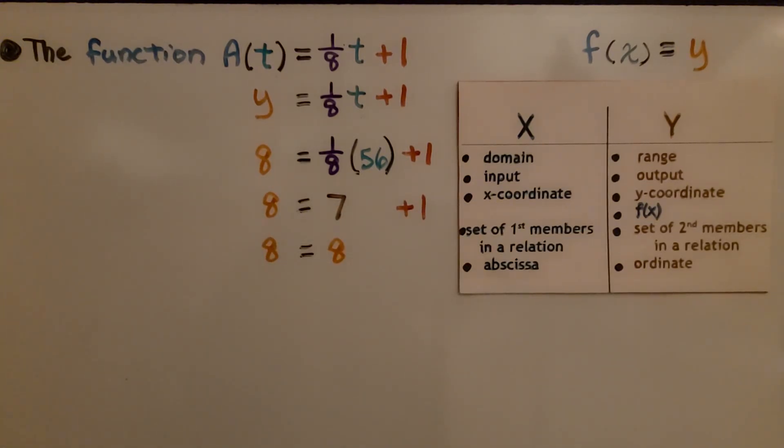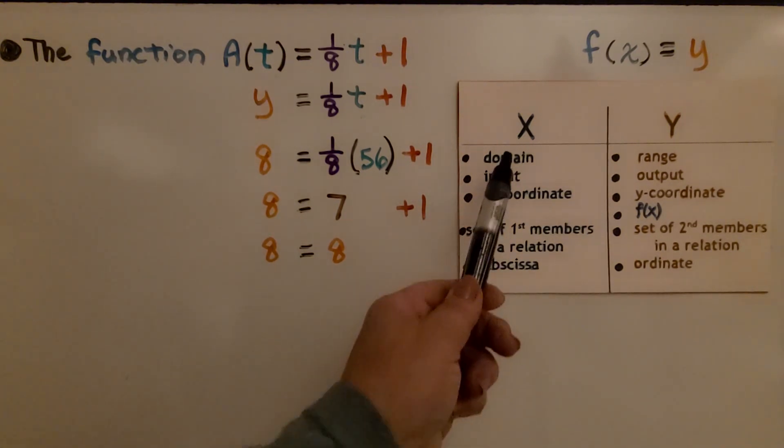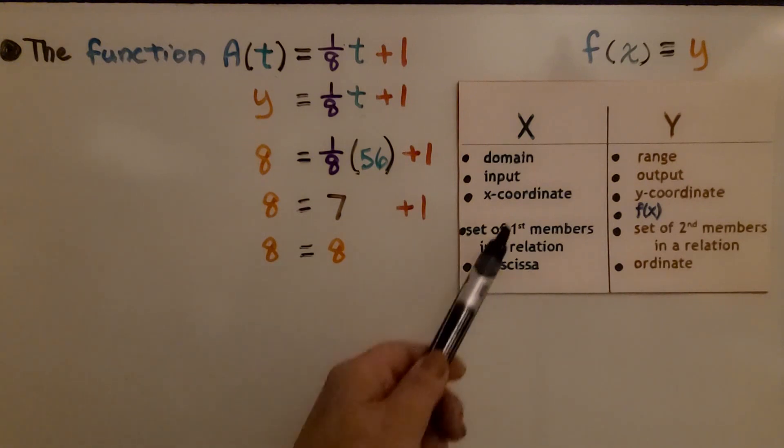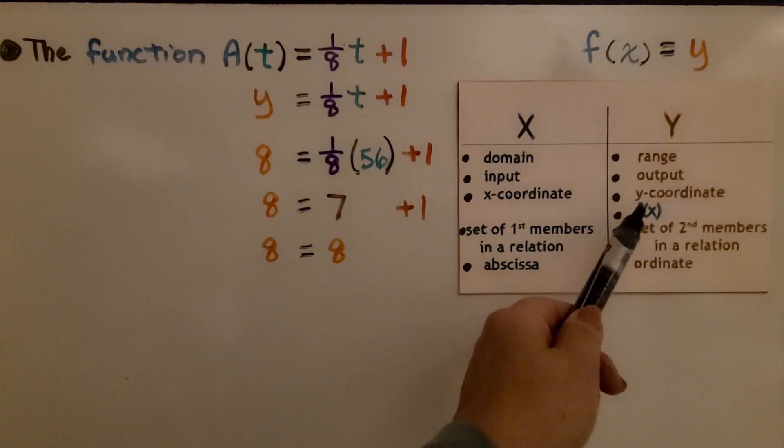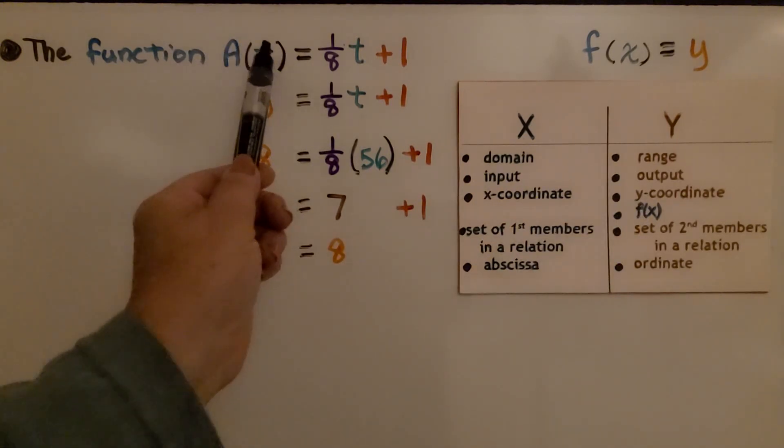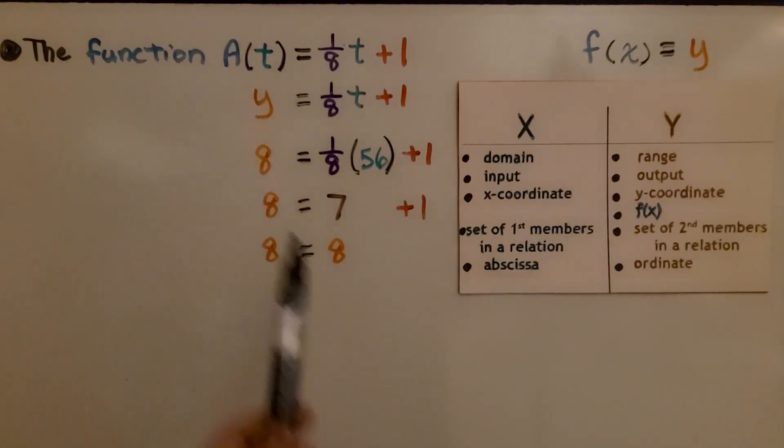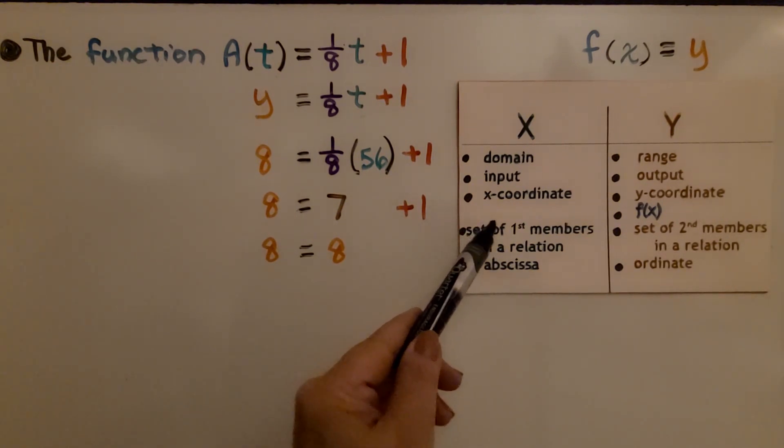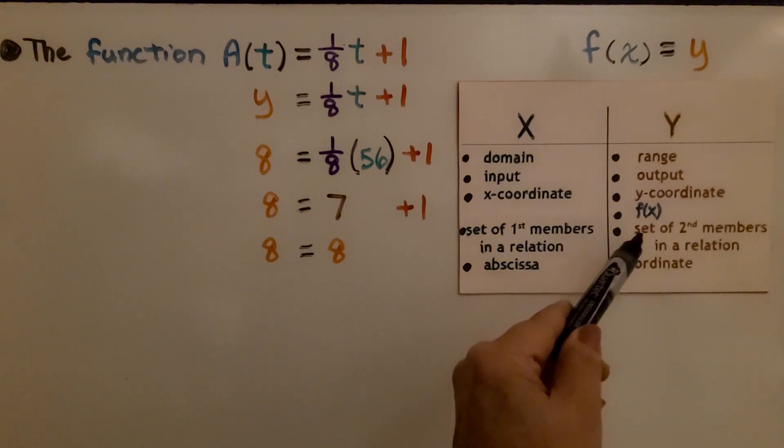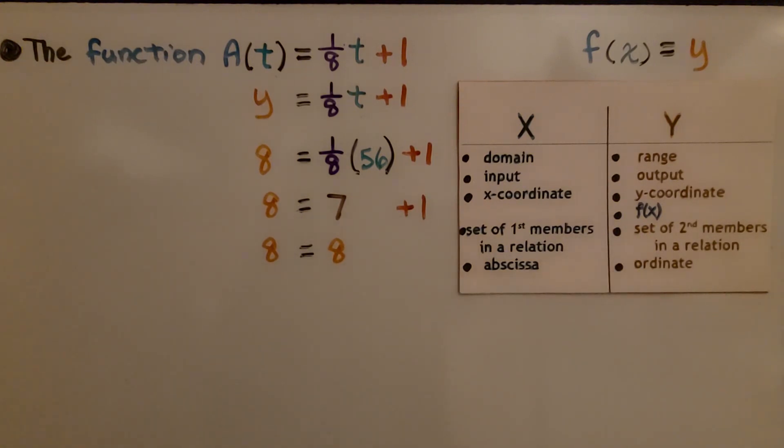As you move forward in algebra, you're going to find many different names for the x and y values. They could be called the domain and range, they could be called the input and output. It's the x-coordinate, the y-coordinate, y is the f(x), or in this case, A(t). It's the set of first members in a relation, like in an ordered pair, and the y is the set of second members in a relation. You're also going to learn later on that these are called the abscissa and the ordinate, just to introduce those terms to you.